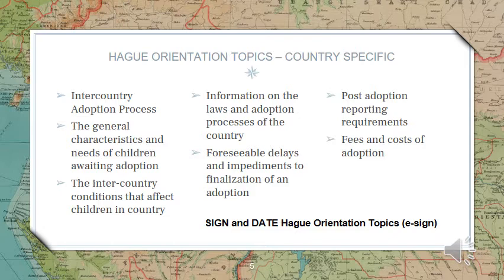The Taiwanese foster care system is very well developed and foster families are trained and supervised very closely. In general, children in Taiwan are considered to be well cared for and fairly healthy. Children being cared for in orphanages are typically given less than one-on-one attention due to limited government funding. These children are more likely to be delayed in all areas or some areas of their development. Families should expect that a child will be approximately four months delayed for every year he or she has spent in an orphanage setting.